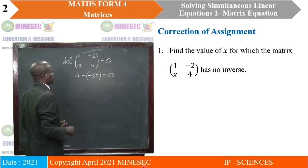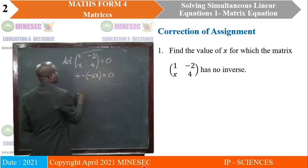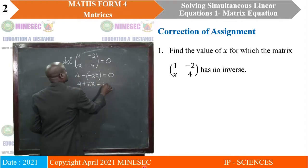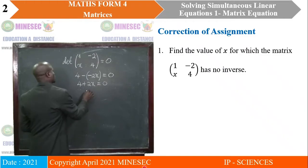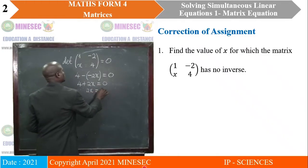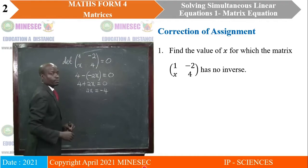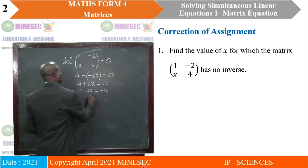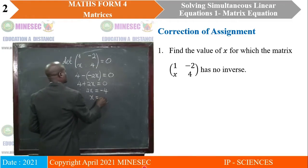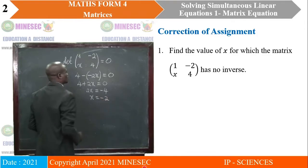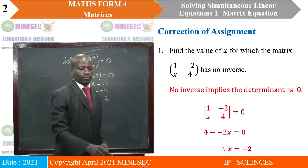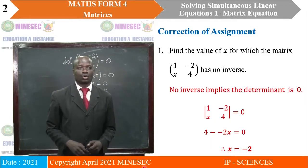This is a linear equation and to solve it, when we open the bracket, we have 4 plus 2x is equal to zero. So 2x is equal to negative 4. We now divide both sides by 2, so x is equal to negative 2. That's the value of x for which that matrix has no inverse.